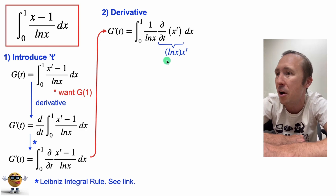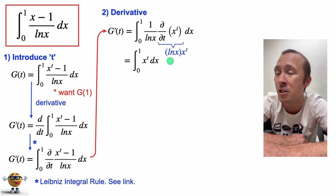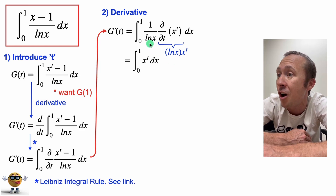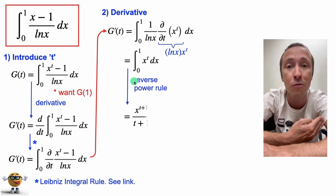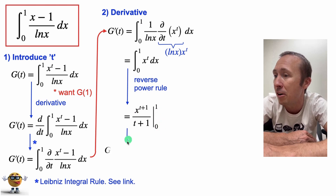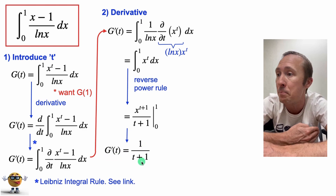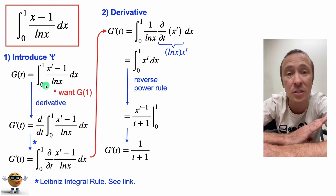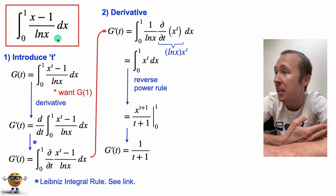This is the whole reason why we took the derivative with respect to t — check this out: the ln x in the denominator cancels out with this ln x, and we're now left with a super easy integral. This is the reverse power rule, evaluated from 0 to 1. Plugging in the limits, we get g'(t) = 1/(t+1). So by introducing this parameter and taking the derivative, we created a much easier integral than the one we started with.